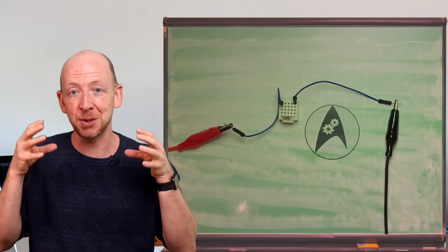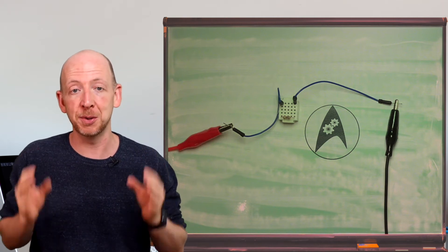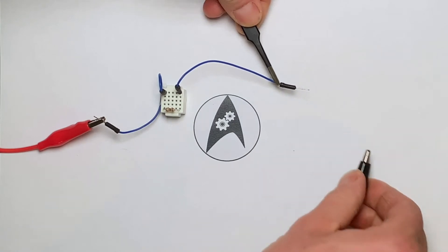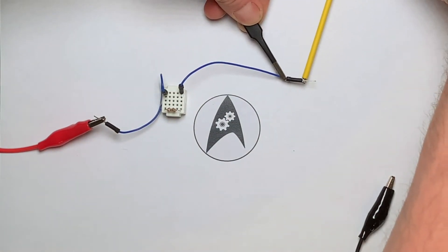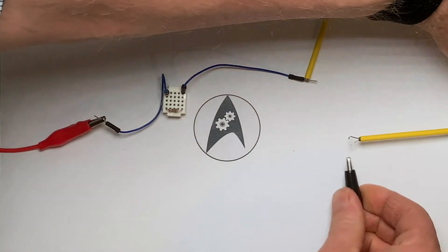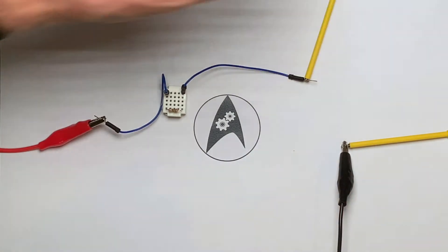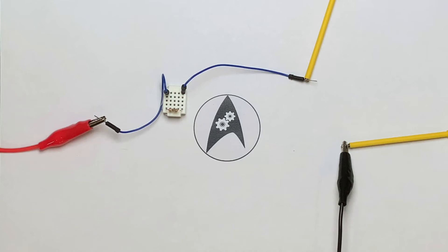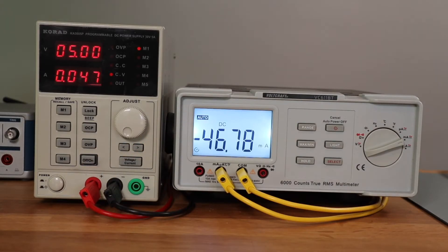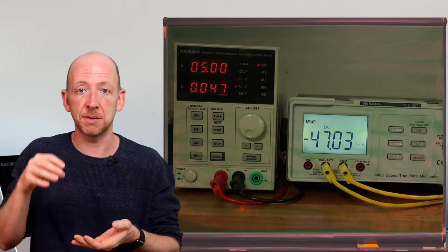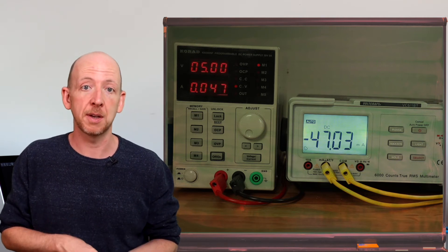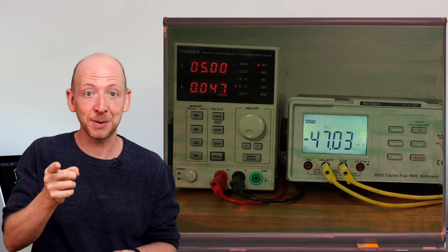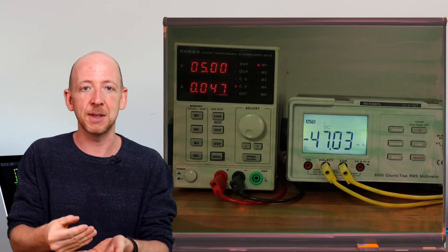To measure the current we install the amp meter directly into the circuit behind the resistor. We remove the black crocodile clip, connect the yellow terminal of the meter to the blue cable leading to the resistor, and connect the second yellow terminal to the free black crocodile clip. The complete current now flows through the resistor and then through the amp meter. Switching on the source, the current reaches a value of 47.02 milliamps — close to the expected 49 milliamps but not identical, with a deviation of around 4%.